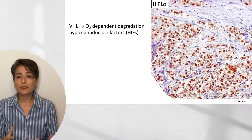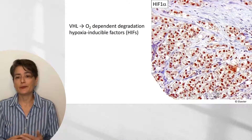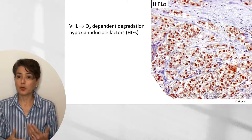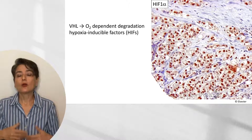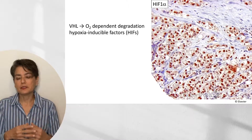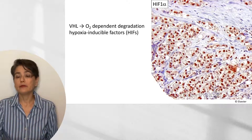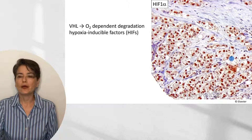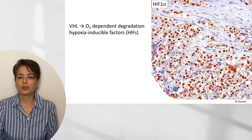This is an immunohistochemical stain for HIF-1-alpha, a nuclear transcription factor. With the absence of von Hippel-Lindau protein, we have abundant HIF-1-alpha that translocates to the nucleus — hence the nuclear staining — contributing to the pathogenesis of this renal cell carcinoma.